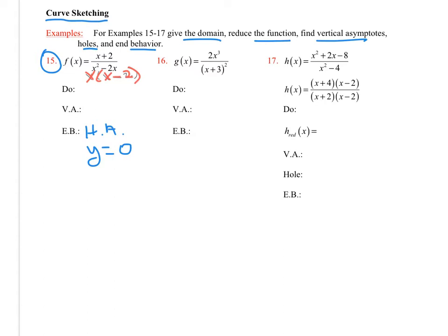Domain: I factored the denominator as x times (x minus 2), so x can't be 0 nor can it be 2. That leads us straight to our vertical asymptotes: x equal to 0 and x equal to 2. So that's number 15.